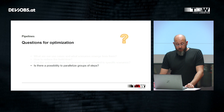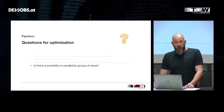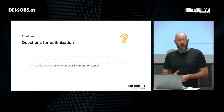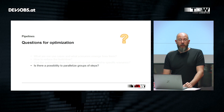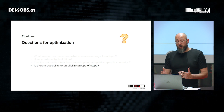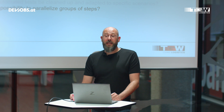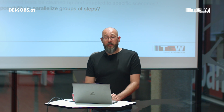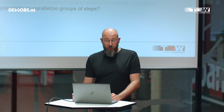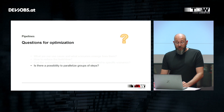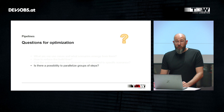The last thing you can ask yourself is: is there a possibility to parallelize groups of steps? You can put steps into jobs, and these jobs run on separate agents. If you have more than one agent, these jobs can run in parallel. That sounds like a miracle cure, but it often is not — because if the steps are highly dependent on each other and the data they share is large, the overhead mitigates the benefits of parallelization. It works really well when you have truly independent steps with little data sharing.